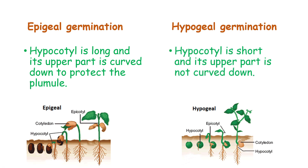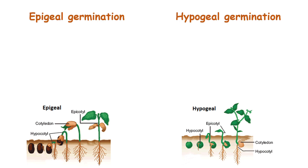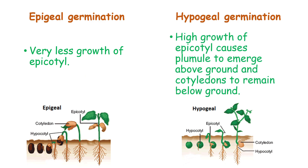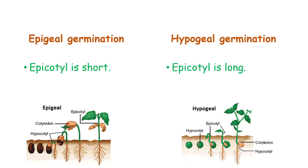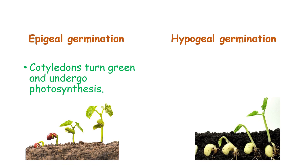In hypogeal germination, the hypocotyl is short and its upper part is not curved down. In epigeal germination, there is very little epicotyl growth. In hypogeal germination, the high growth of the epicotyl causes the plumule to emerge above the ground while the cotyledons remain below. So the epicotyl is short in epigeal germination and long in hypogeal germination.